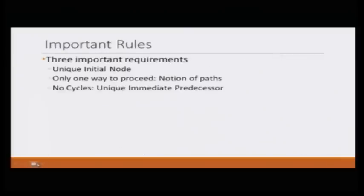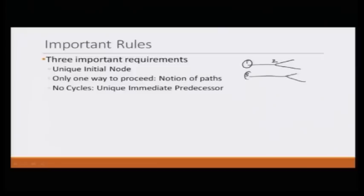In a game tree, we have to keep three things in mind. First, there should be only one initial node — the game should have only one beginning. For example, a graph where the game begins at two different points is not allowed and is not a valid game tree.